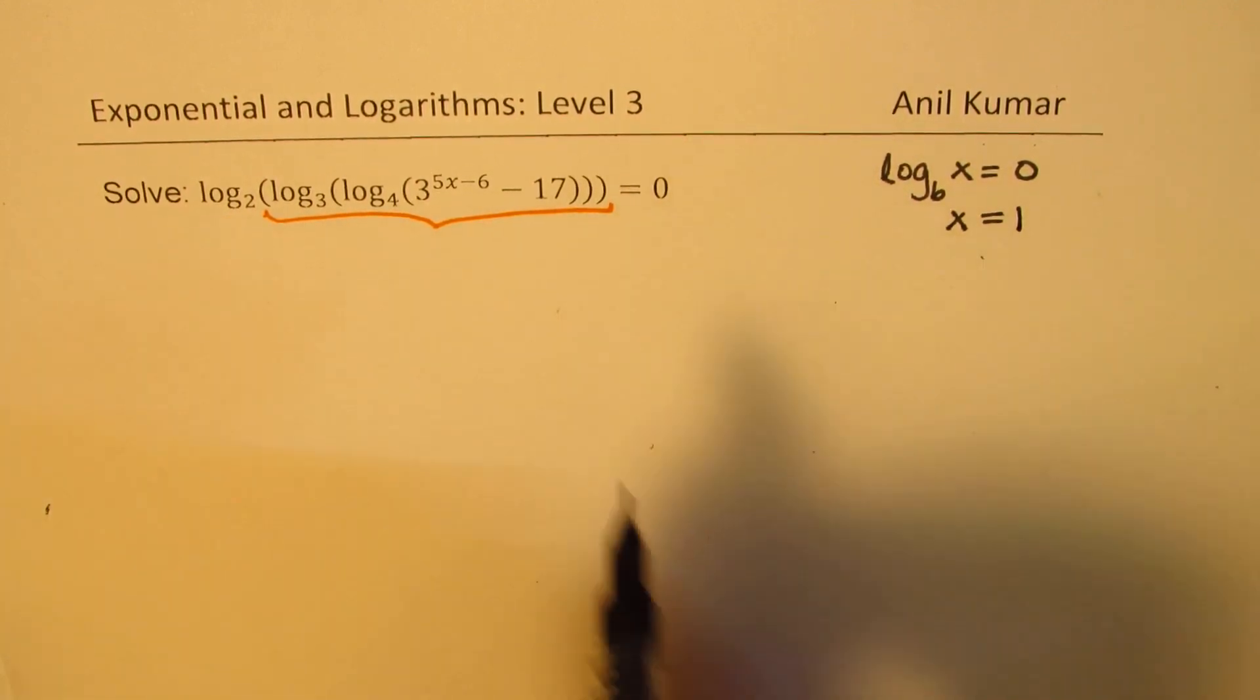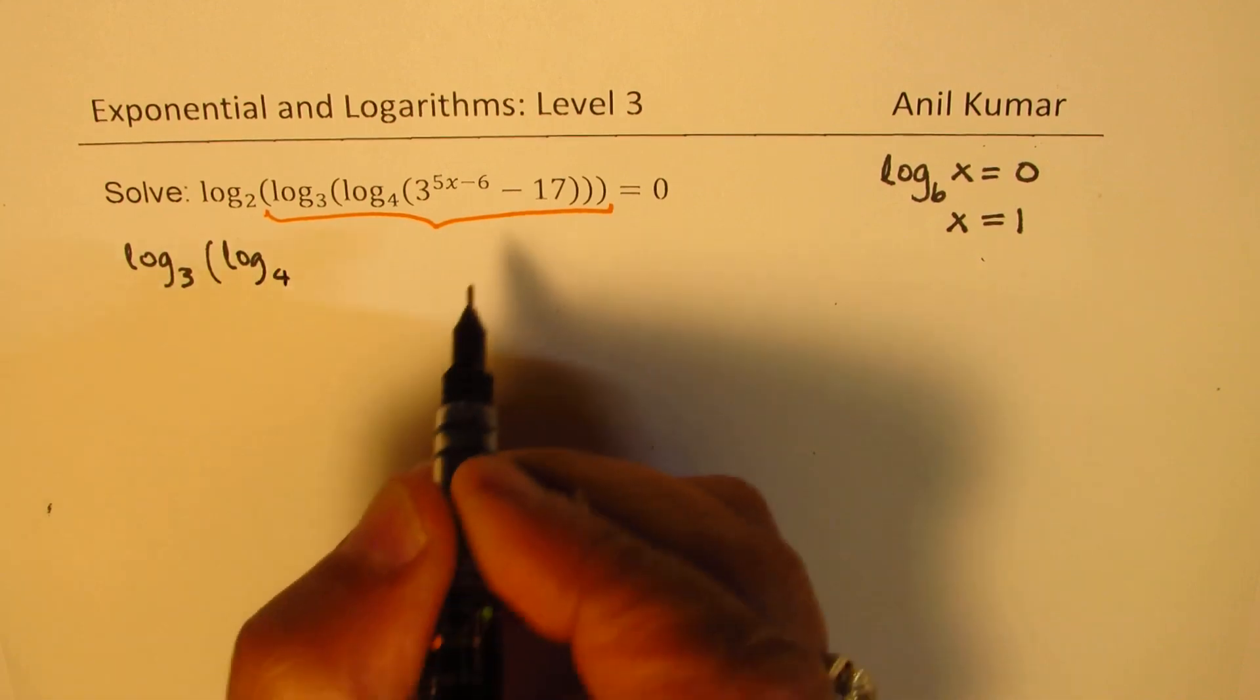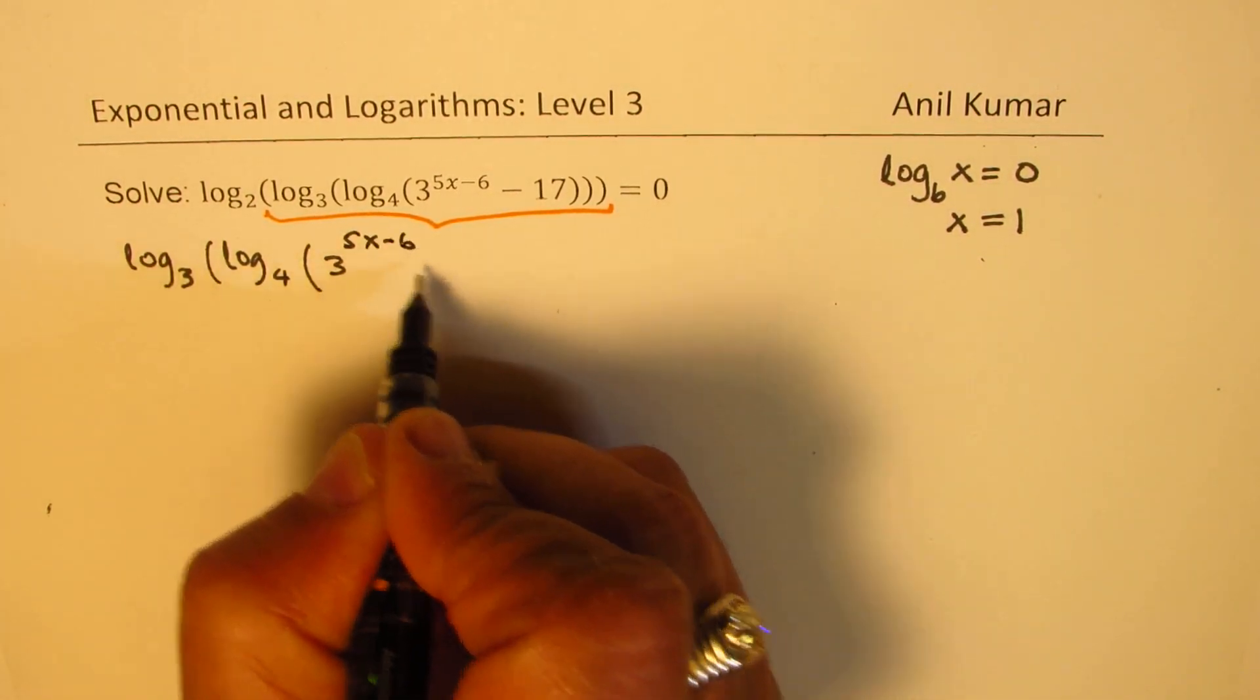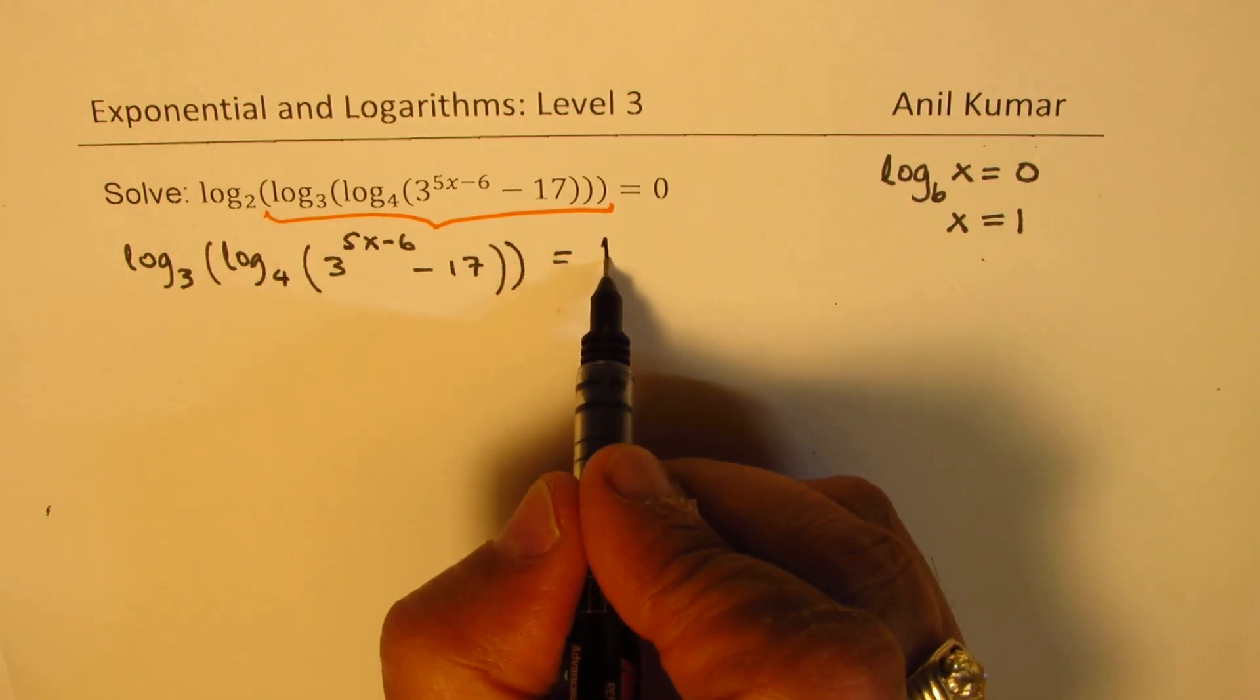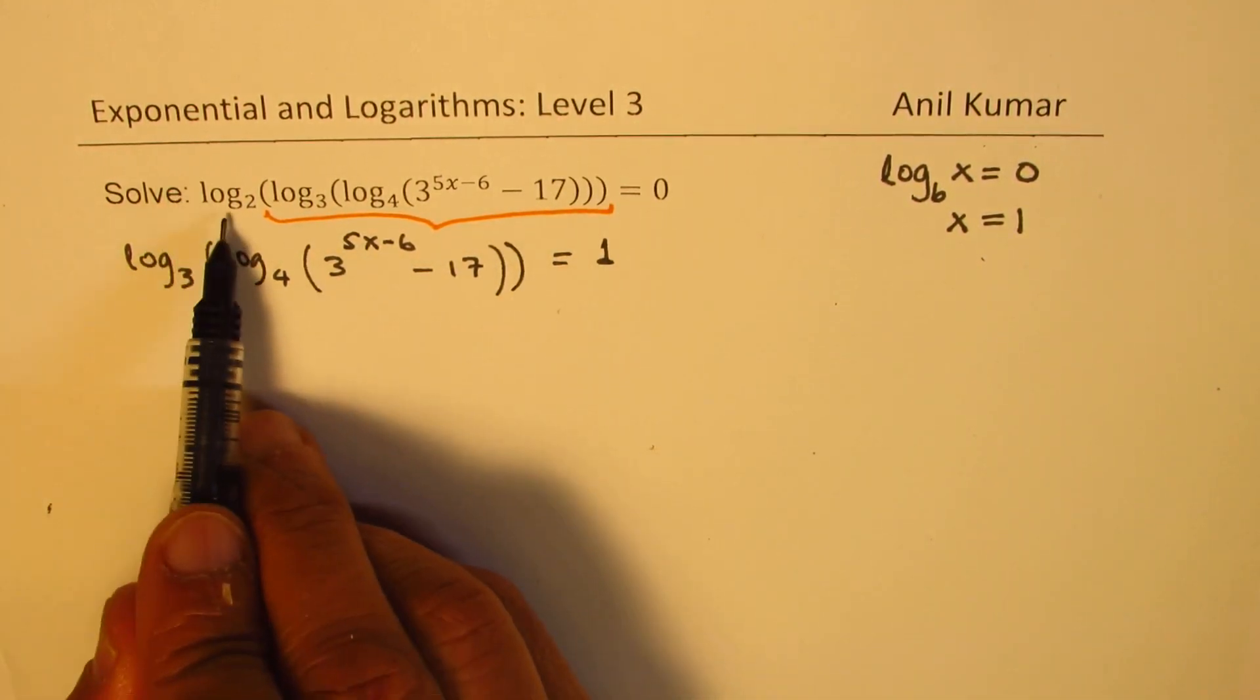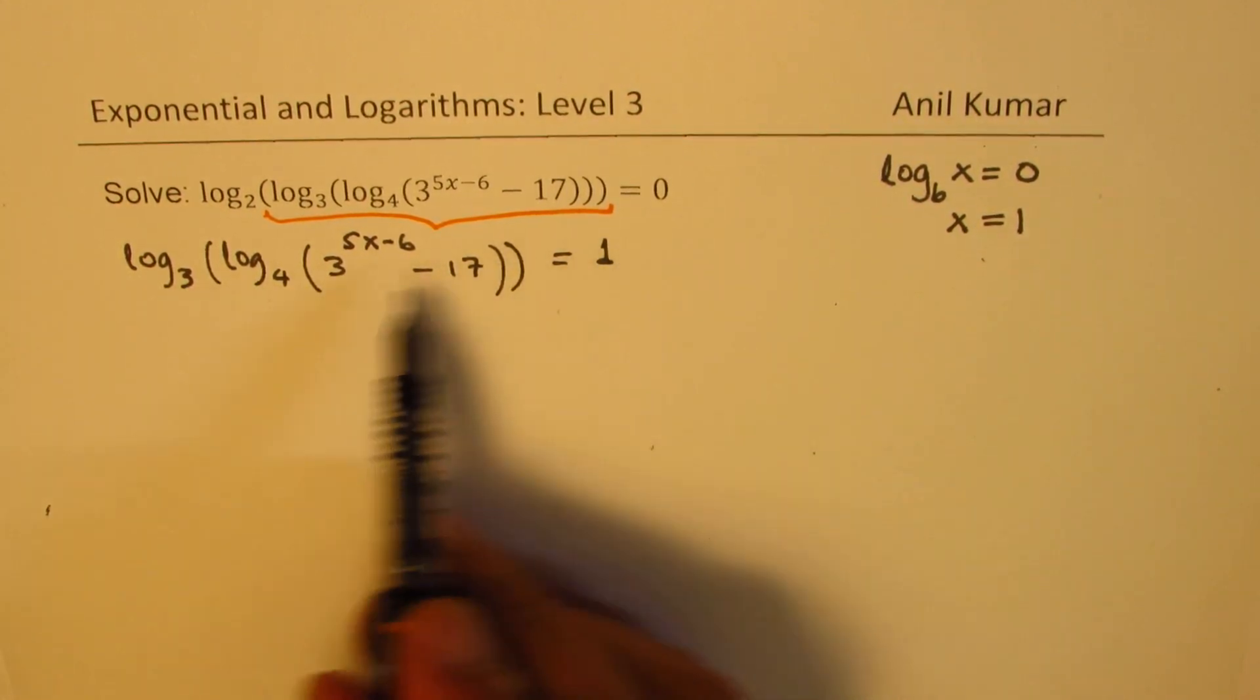So that basically means that log to the base 3 of log to the base 4 of 3 to the power of 5x minus 6, minus 17, should be equal to 1. Only when all this is equal to 1, then log to the base 2 of 1 will be 0. Now we can convert this to an exponential equation.